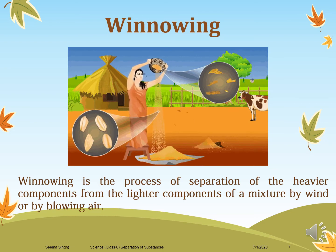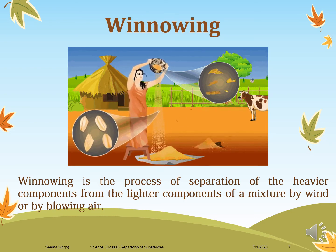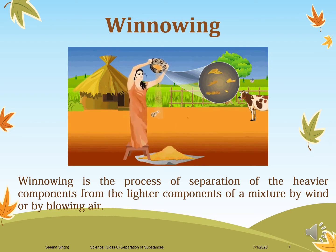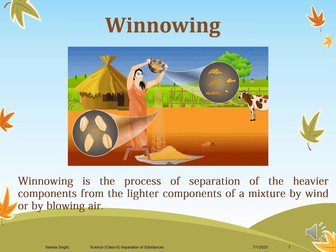Winnowing. Winnowing is the process of separation of the heavier component from the lighter components of a mixture by wind or by blowing air. This is also a manual method where wind or blown air is used. The lighter components get blown away by the air, while the heavier grain particles drop down to the surface. This method is also used to clean grains.